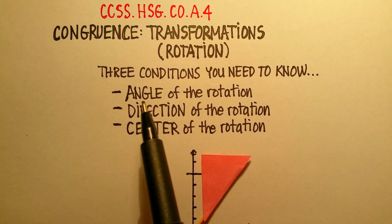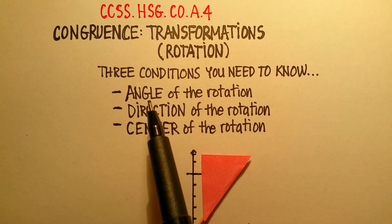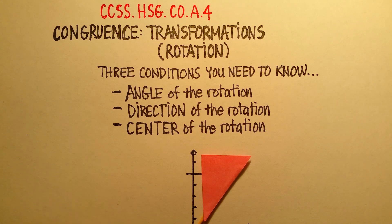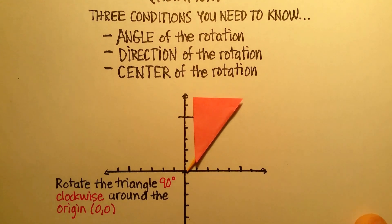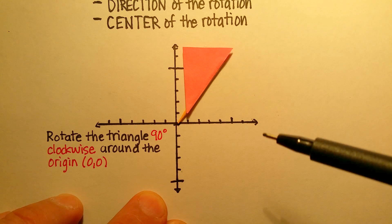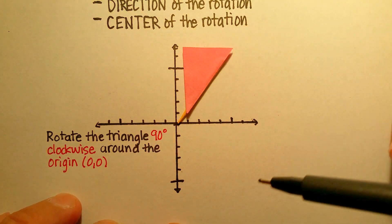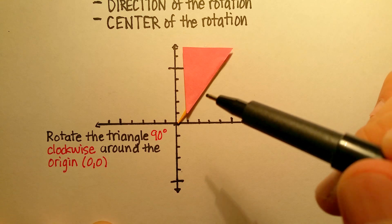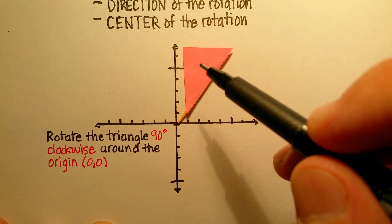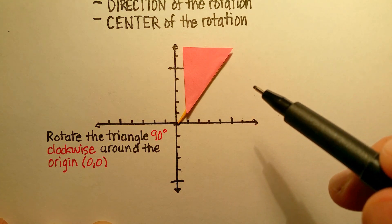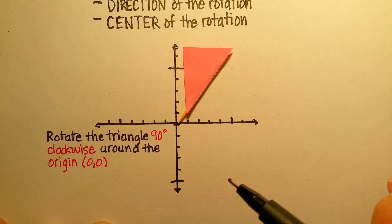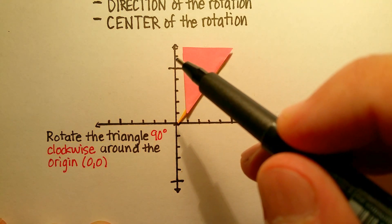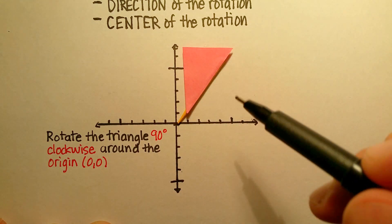The first thing you need to know is the angle of the rotation that you're going to do. On a flat surface like this one — the xy-axis — there are basically 360 degrees in a round circle. So I can actually indicate the number of degrees I want this to move, like 90, 180, 270, or 360, and I can do it in either direction.